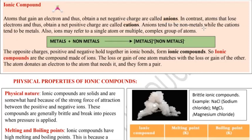Anions tend to be non-metals, while cations tend to be metals. Generally, anions, meaning atoms with a net negative charge, are non-metals, and cations, meaning atoms with a net positive charge, are generally metals.